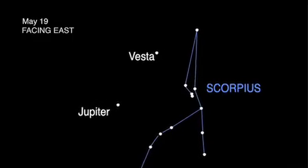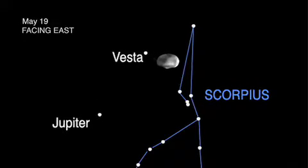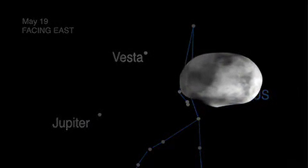We're going out to Ceres and also to Vesta, and these are very different bodies. Vesta is the brightest asteroid in the solar system and the only one visible to the naked eye. In one sense it's sort of like our moon, but in another sense it's sort of like the Earth.